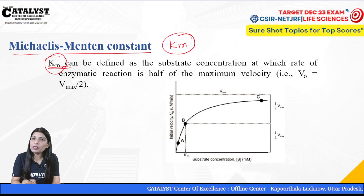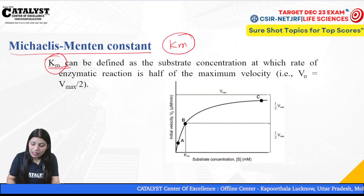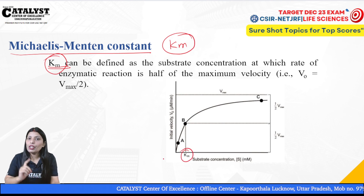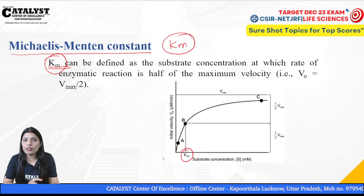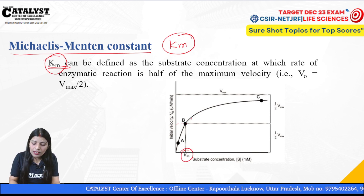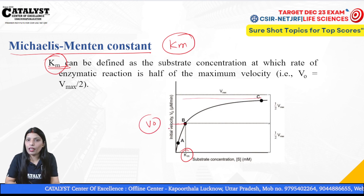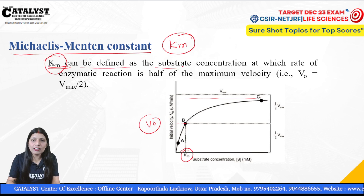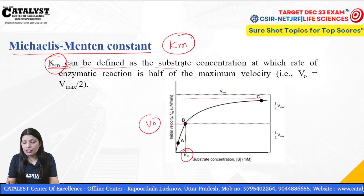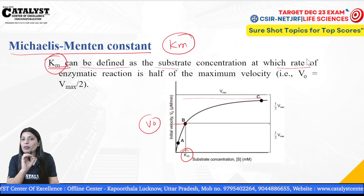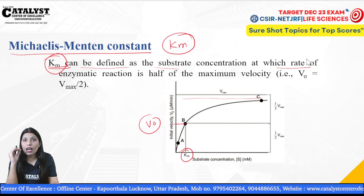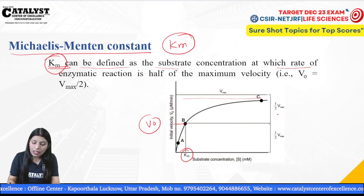So what is Km? Km is exactly the substrate concentration at which V0, the initial velocity, is half of the maximum velocity. We can define Km as the substrate concentration at which the rate of enzymatic reaction is half of the maximum velocity, that is half of Vmax.